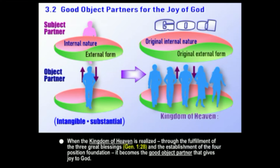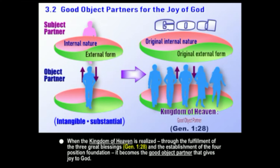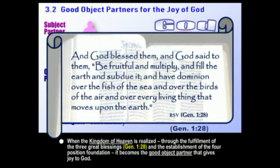The kingdom of heaven is realized through the fulfillment of what we will refer to as the three great blessings, which we take from the book of Genesis. Establishing a four-position foundation — you'll see that diagram of the four positions in just a minute — becomes a good object partner to God and can give joy to God. These three great blessings come from Genesis 1:28, when God said: 'Be fruitful, multiply, and have dominion over the creation.'